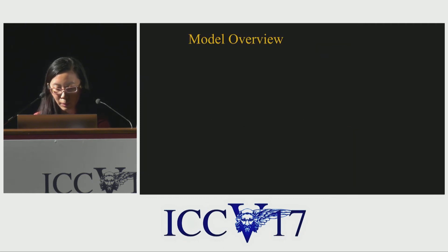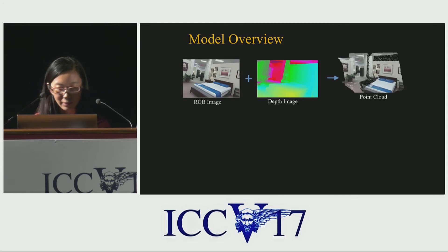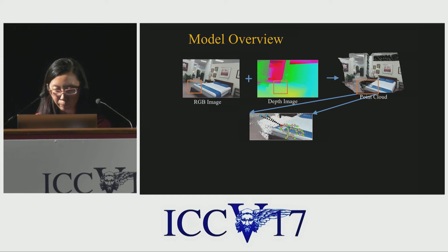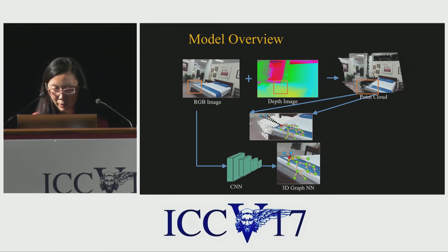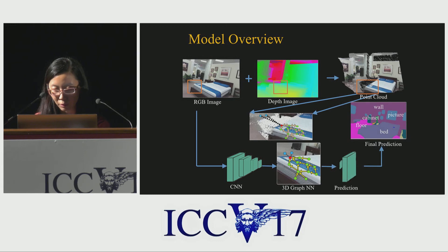Now let's look at the overview of our model. Given a 2D image and the corresponding depth map, we first project it into a 3D point cloud and the graph is constructed for each node. For each node, we extract a feature using a CNN, which is recurrently updated with our 3D graph neural network. Prediction is made on the final updated features and we get our final results. This network is fully end-to-end and trained by backpropagation through time. Overall, our model can capture long-range dependencies in the 3D space.